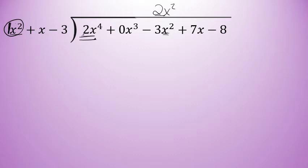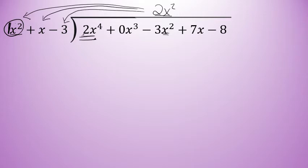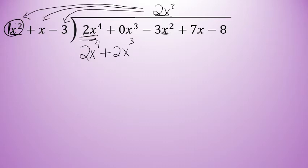I'm going to take that 2X squared and multiply it by all of the terms in the divisor — all of the terms in the polynomial outside of the division sign. First, 2X squared times X squared is 2X to the 4th. Then 2X squared times X — a positive times a positive — is positive 2X to the 3rd power. And finally, 2X squared times negative 3 is negative 6X squared.